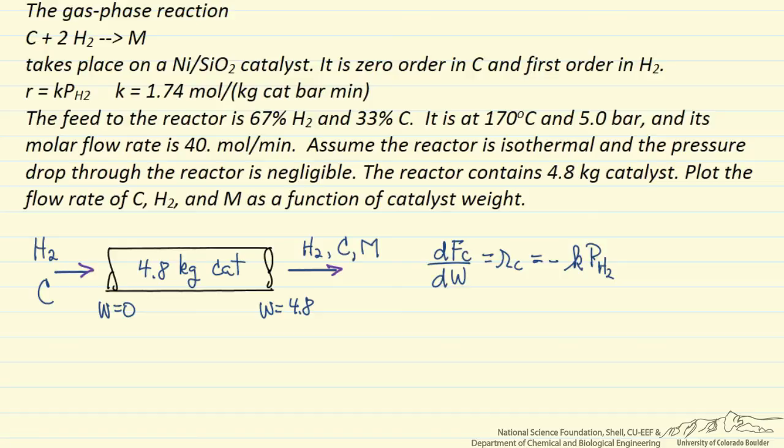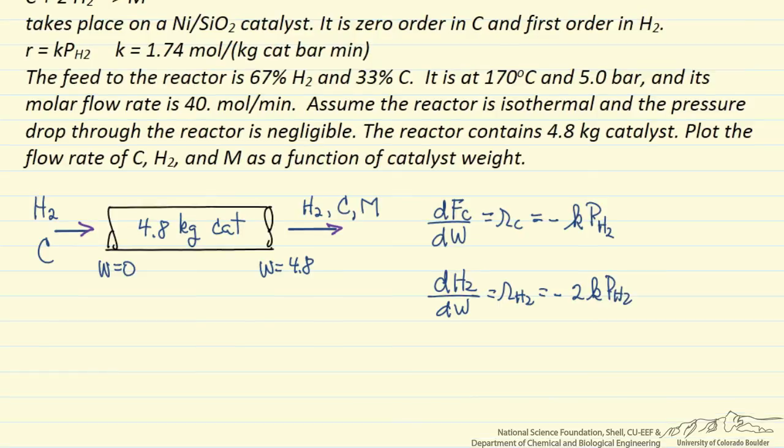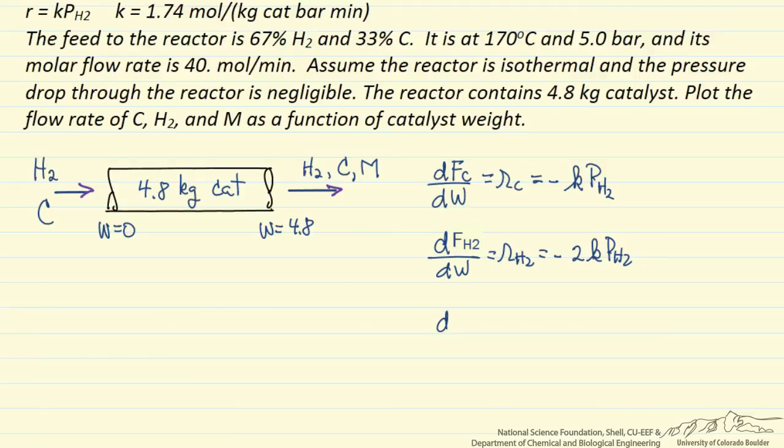And then we are going to similarly write the mole balance for hydrogen. The rate of hydrogen which is minus 2 times the rate constant times the pressure of hydrogen. Finally for the product, the change in the molar flow rate of M with respect to catalyst weight is the rate of M which is plus 1 times the rate constant times the pressure of hydrogen.